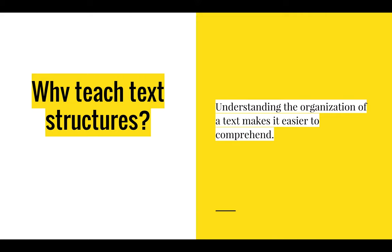If we have a sequencing text structure, we'll know that things are going to happen in order. If we're looking at a cause and effect and we know that we see a major cause of something happening, we'll know to look for that effect. It helps train our brain to look for certain elements that are common within the text structure.